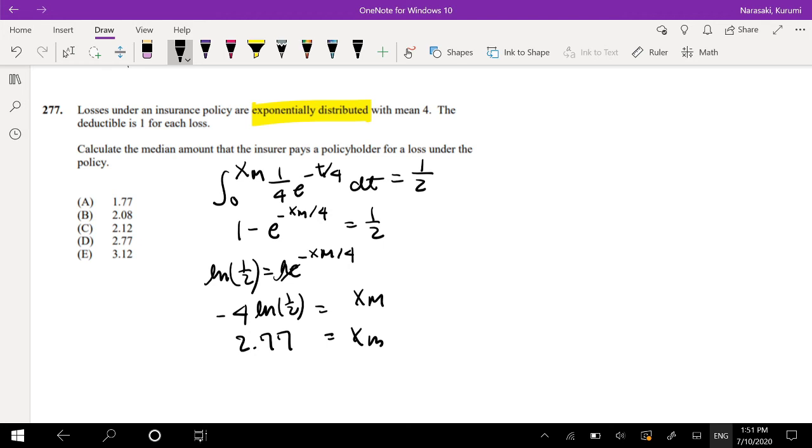So for example, if it costs $6, if the loss is 6, and the deductible is 1, then the company owes 5. Then it's just the company owes 5.